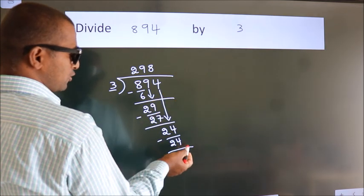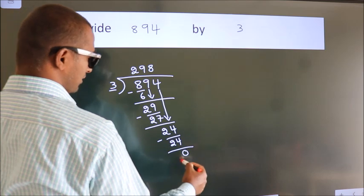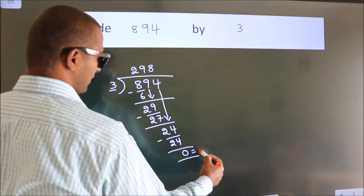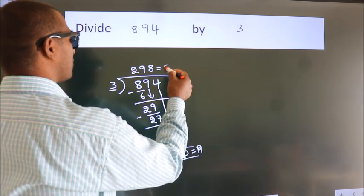No more numbers to bring it down. So we stop here. This is our remainder. This is our quotient.